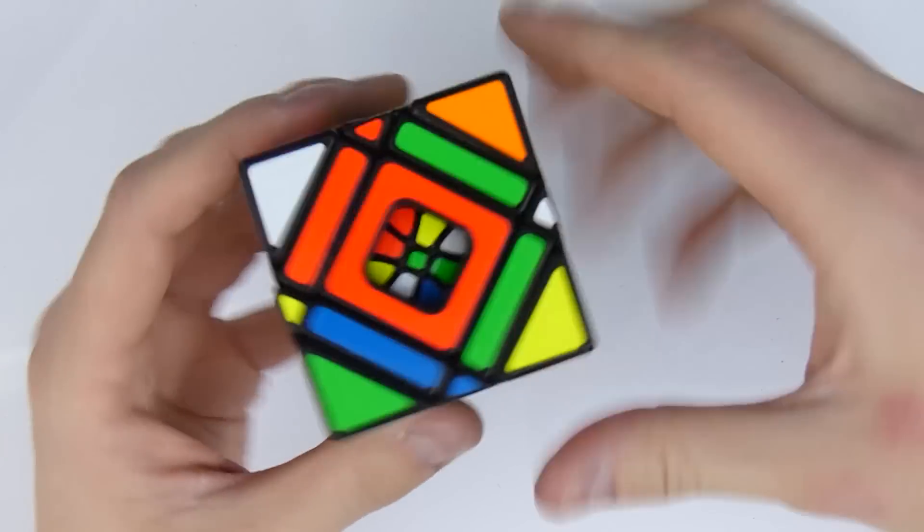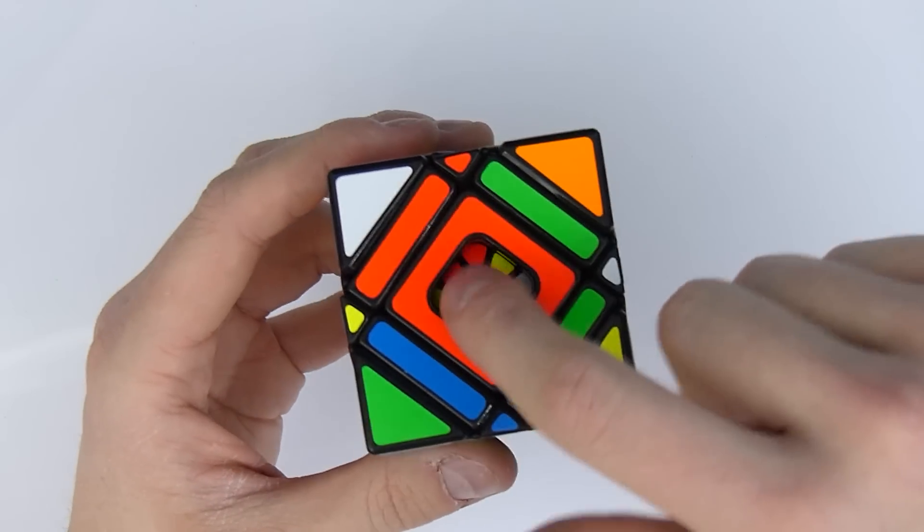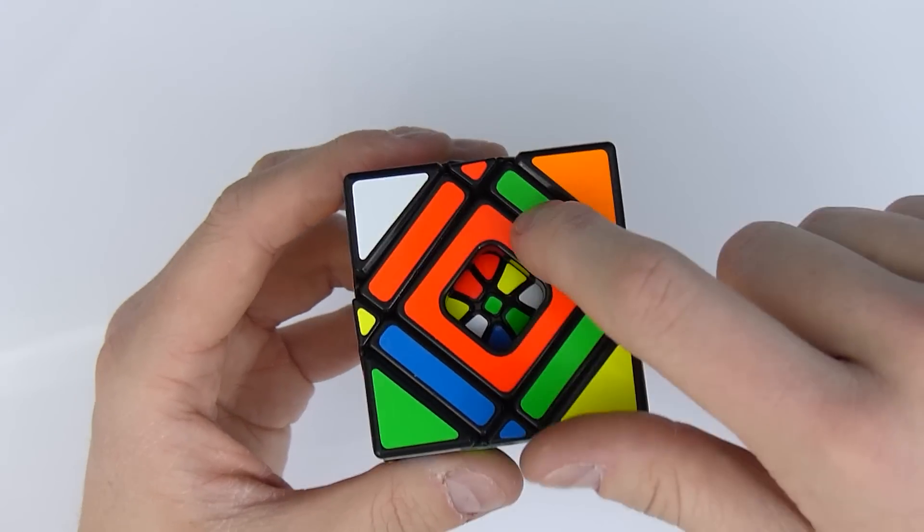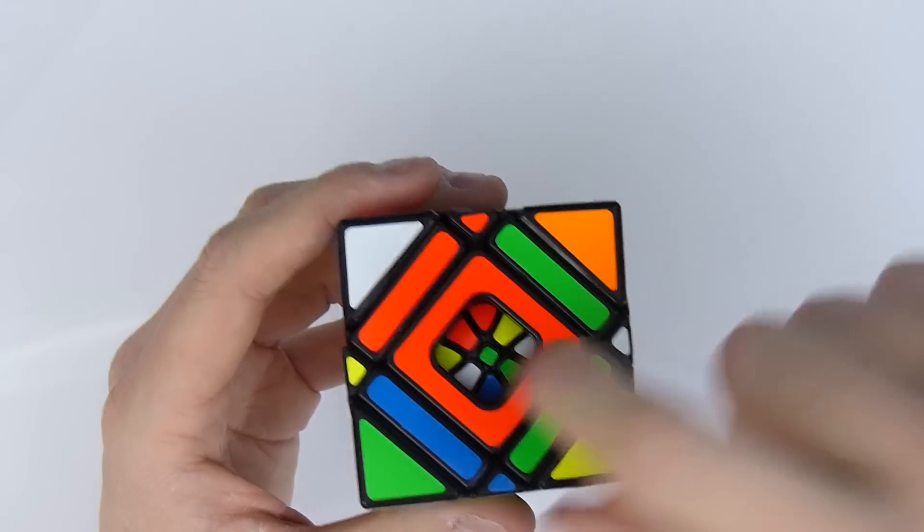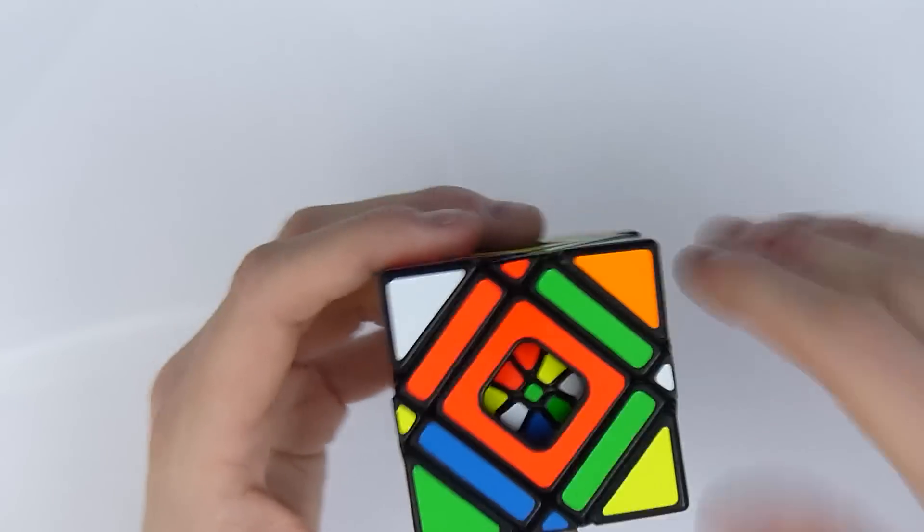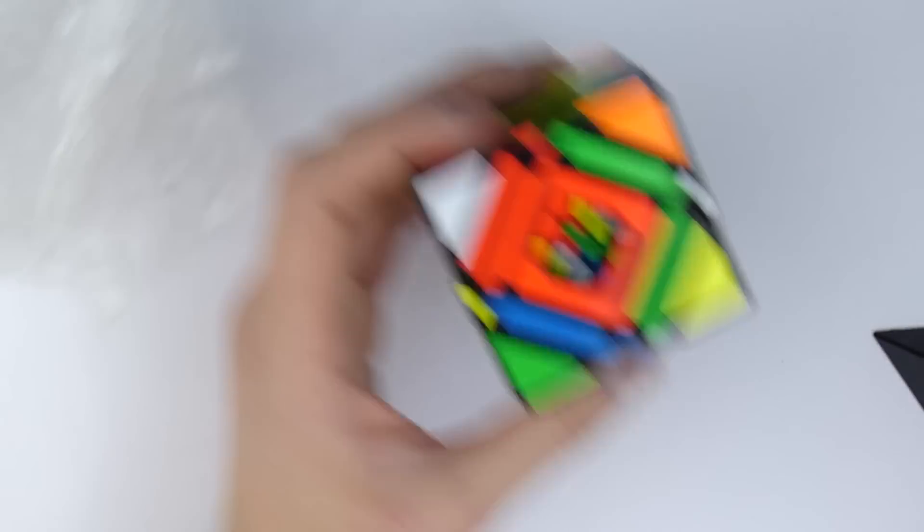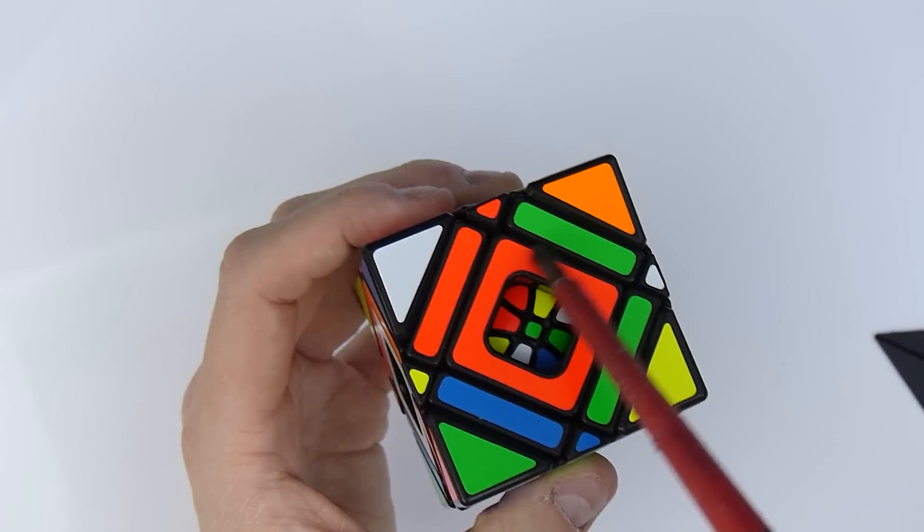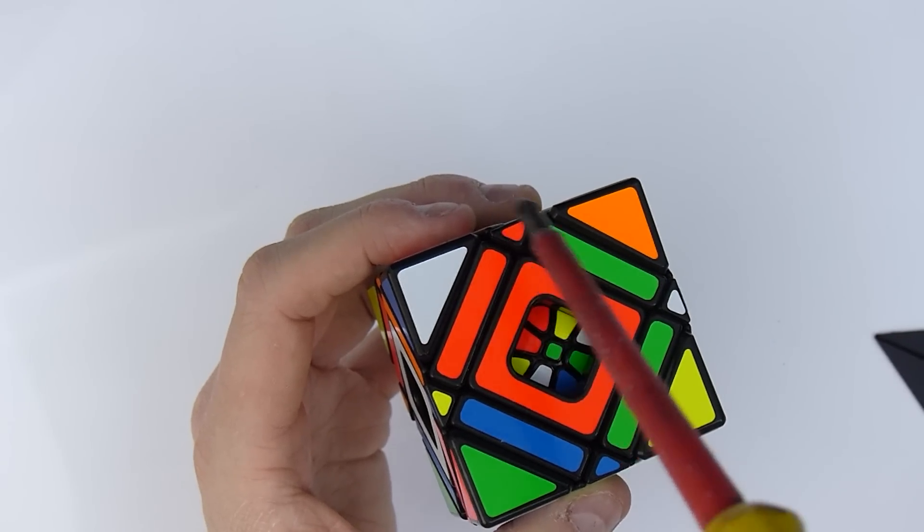So here we go. This is what it looks like scrambled. As you can see, the inside is scrambled completely differently to the outside. There is just one common piece. And, that's the one right here. Let me see if I can show you that with my screwdriver. This piece right there is the same here and here.